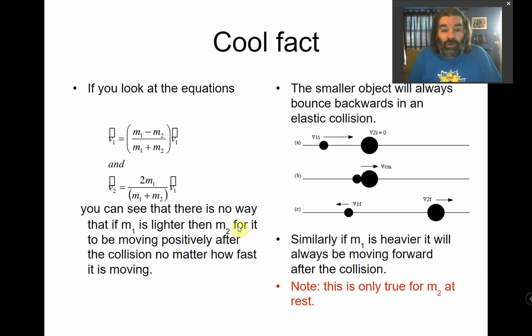Now here's a cool fact. If you look at those equations, you can actually see that if m1 is less than m2, if the lighter ball is the one going in, there's no way it can have a positive velocity.